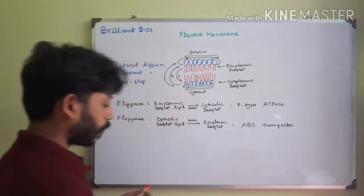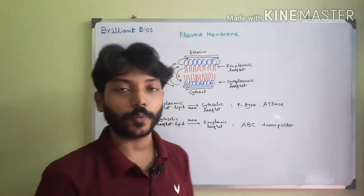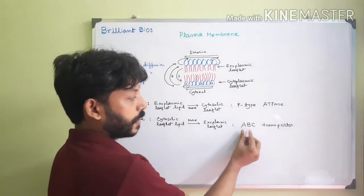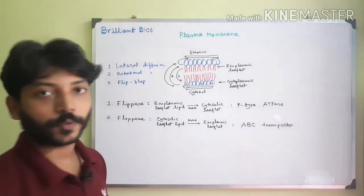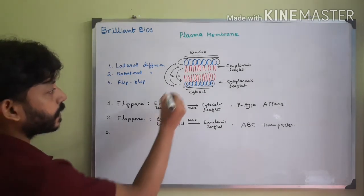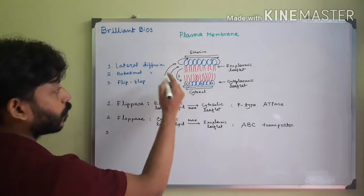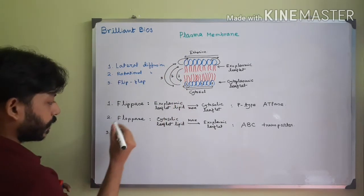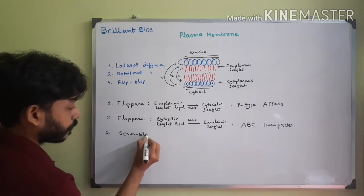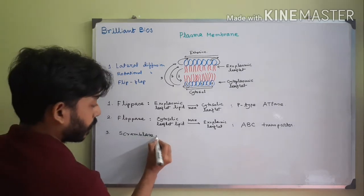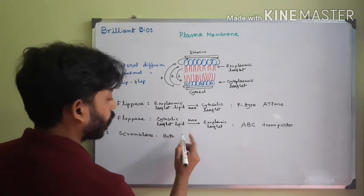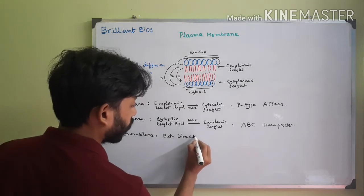I will discuss what P-type ATPase and ABC transporter are when I talk about transport. ABC stands for ATP-binding cassette — these are specific proteins. The third type of movement, which can occur in both directions, is performed by another protein called scramblase. Scramblase allows transport or movement in both directions.